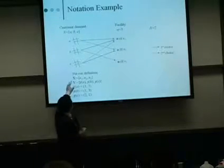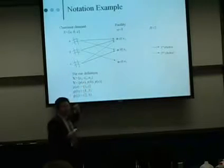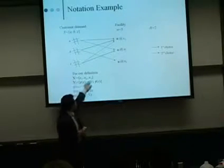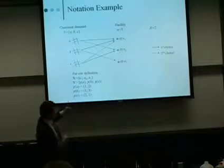And the prior definition, obviously the decision variable X would be 1 to 3, N equals 3, right? 1 to 3. We don't know the location yet, but just like I said.